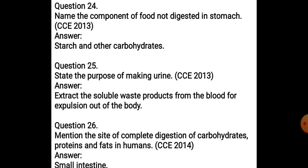Because the digestion of starch starts in the mouth itself. Next: State the purpose of making urine. The answer is to extract the soluble waste products from the blood for expulsion out of the body. So the purpose of making urine is to remove all soluble waste products from the blood and expel them out of the body.